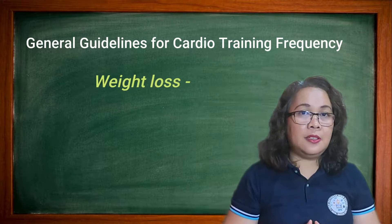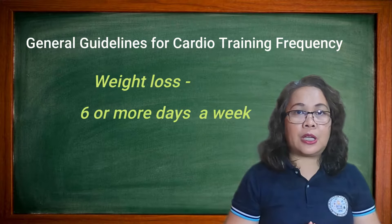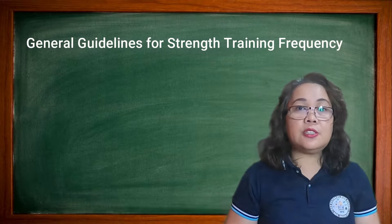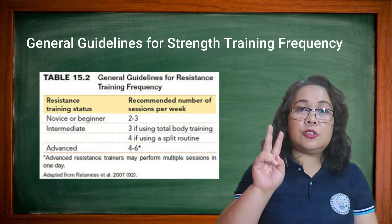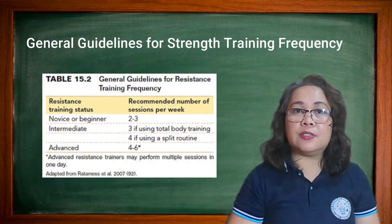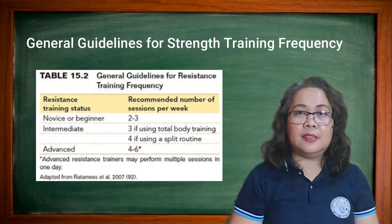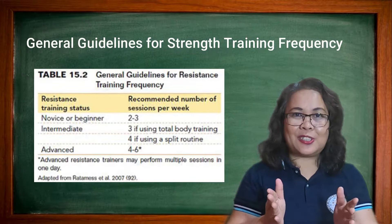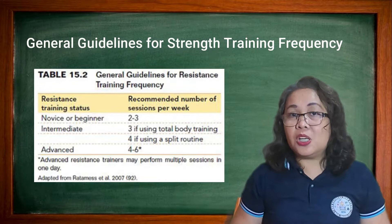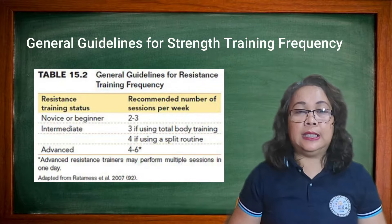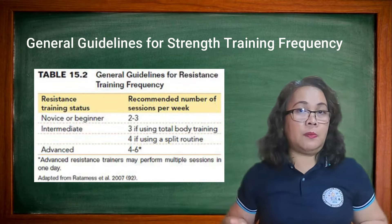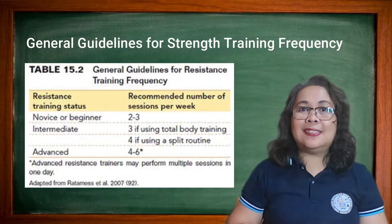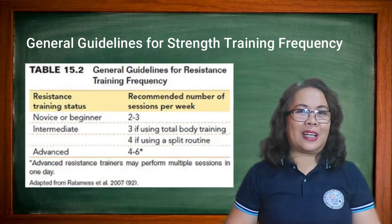If you want to lose weight, more frequent workouts — often up to six or more days a week. For strength training, two or three non-consecutive days a week, with at least one or two days in between sessions. However, if you do a split routine, like upper body one day and lower body the next, your workout will be more frequent than a total body workout.